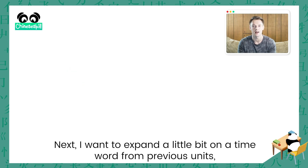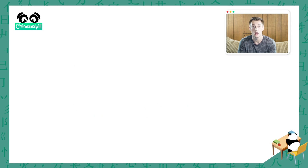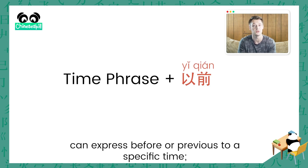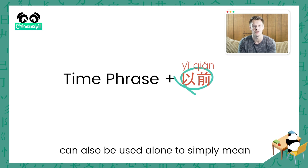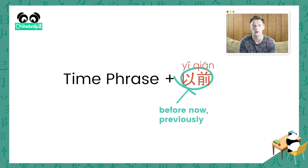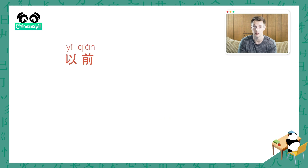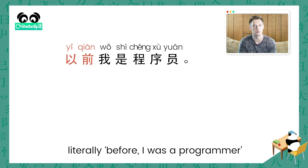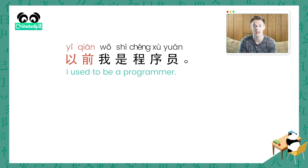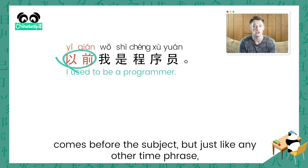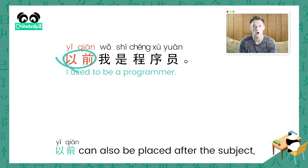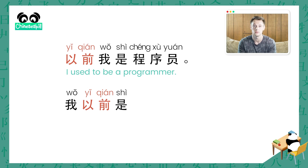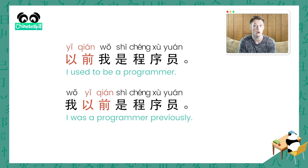Next, I want to expand a little bit on a time word from previous units. Before, we learned that using a time phrase plus 以前 can express before or previous to a specific time. 以前 can also be used alone to simply mean before now or previously. For example, I could say 以前我是程序员 — literally, before I was a programmer, or I used to be a programmer. Here, 以前 comes before the subject, but just like any other time phrase, 以前 can also be placed after the subject. So I could also say 我以前是程序员, which still means I was a programmer previously.